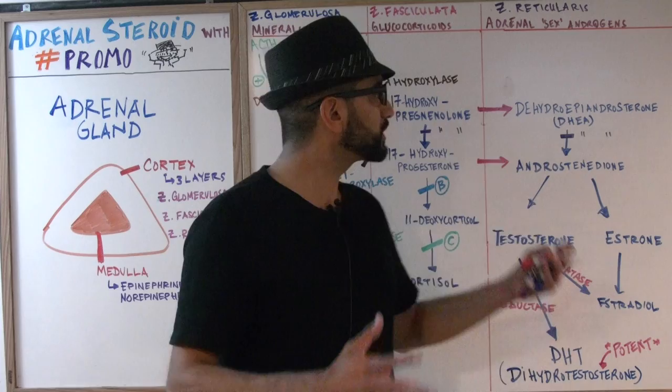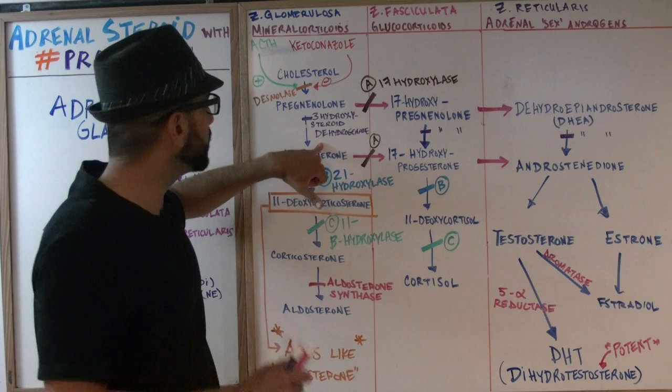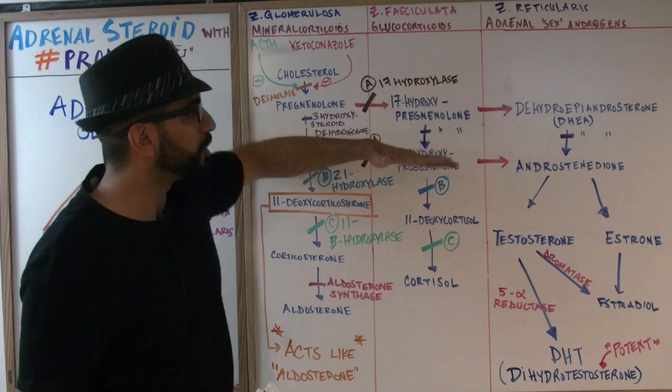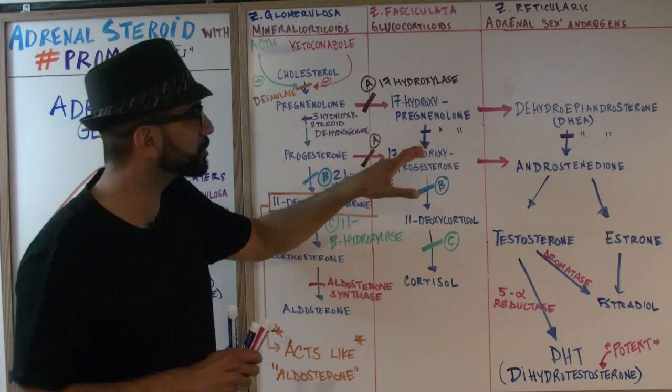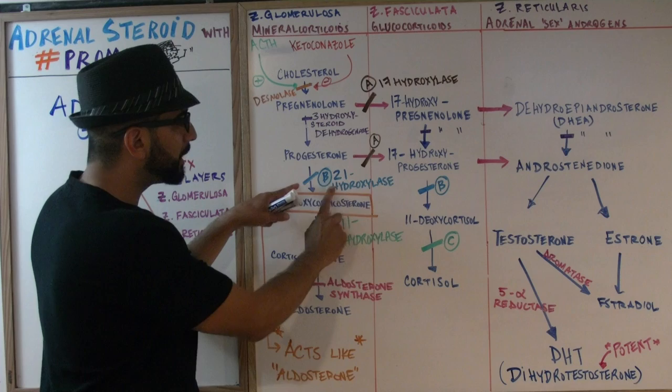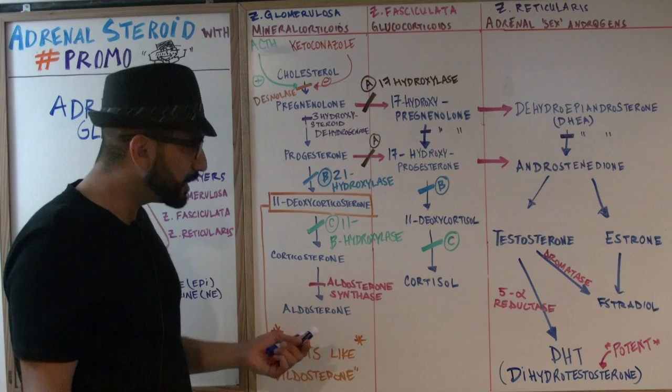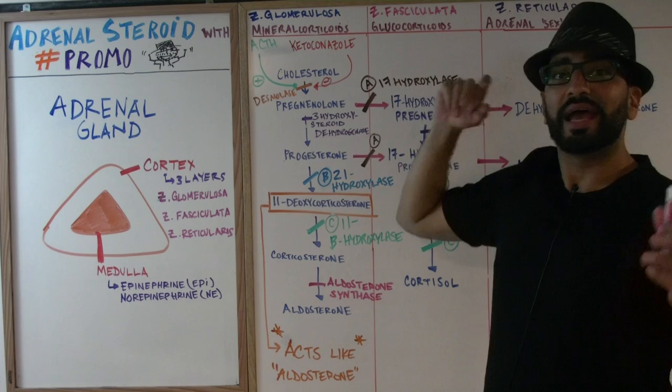The main takeaway: 3-hydroxysteroid dehydrogenase performs the first vertical conversion step in all three columns. Then you have 17-hydroxylase converting pregnenolone into 17-hydroxypregnenolone, as well as progesterone into 17-hydroxyprogesterone — that's your horizontal enzyme. The remaining two enzymes are 21-hydroxylase and 11-beta-hydroxylase, each converting sequential steps further down the pathway.